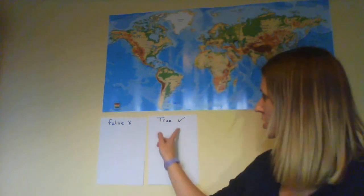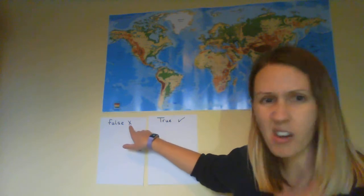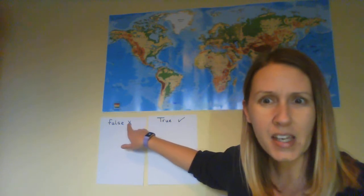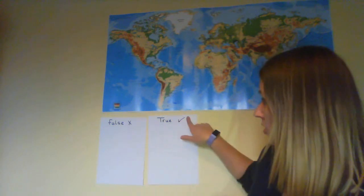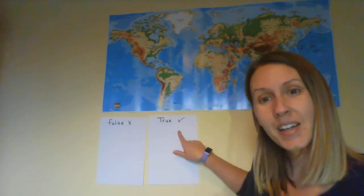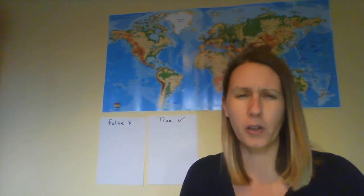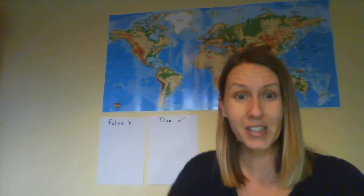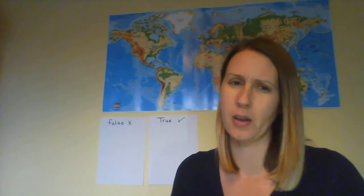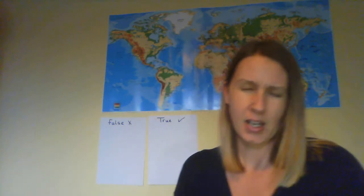Today we're going to play a game. I've got two pieces of paper on my wall: this one has a cross and says 'false,' this one has a tick and means 'true.' I'm going to show you facts about penguins, and you decide whether they're false or true. Can you practice those sounds? Ready? False... True! You've got it! Let's start with an easy one.